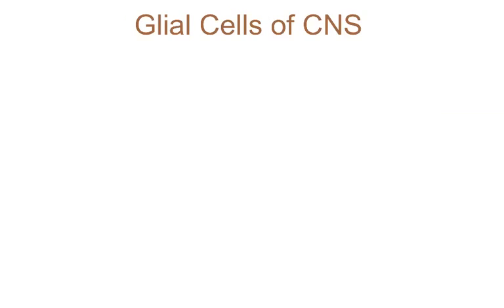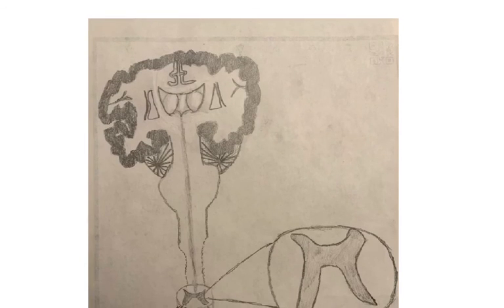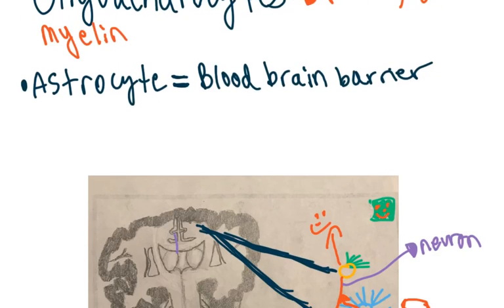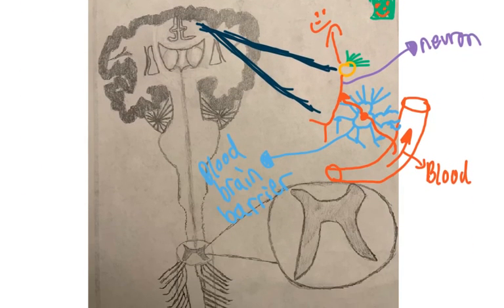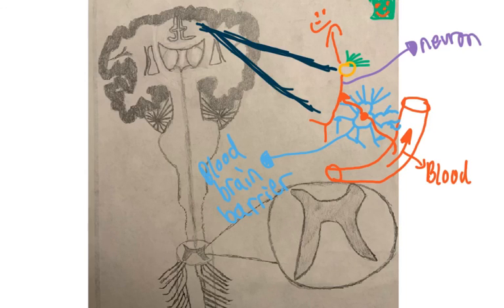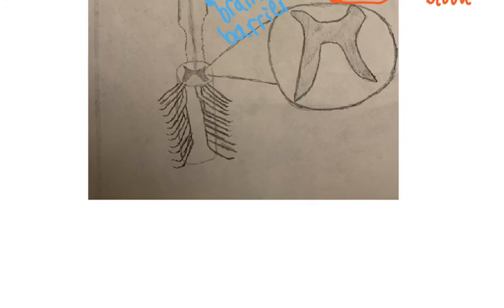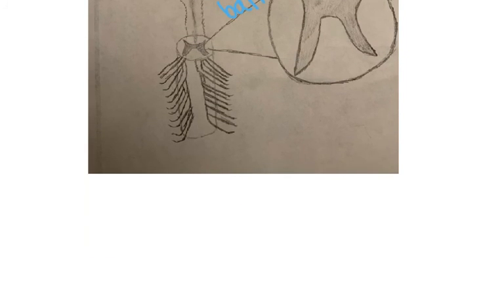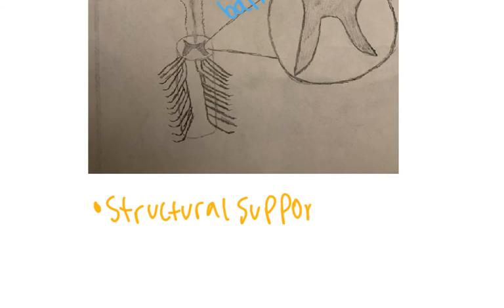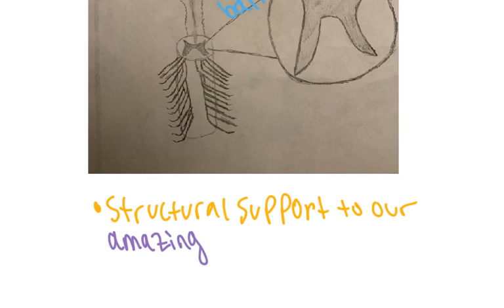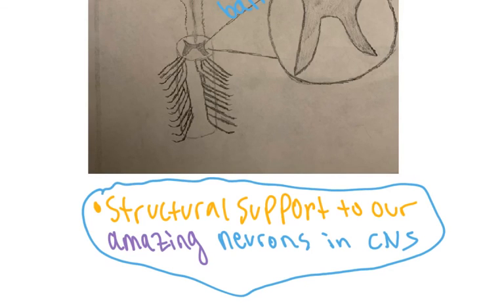One more basic job of the astrocyte is that it helps provide structural support to neurons. Because it's attached to both the neuron and the blood vessel, it gives the neuron support and rigidity. So astrocytes provide structural support to neurons in our central nervous system.